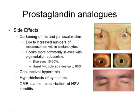Here we see images showing a little bit of periocular darkening on one side compared to the other, and a darker iris compared to the other side. That's more evident in the photos below, where you can really see the discrepancy in color, as well as the conjunctival hyperemia, typically associated with the prostaglandin analogs. And here you have a nice example of prostaglandin eyelashes, where the medication is used on the right eye.